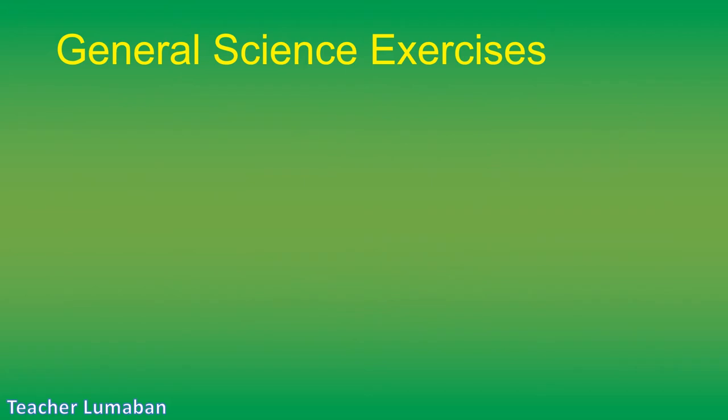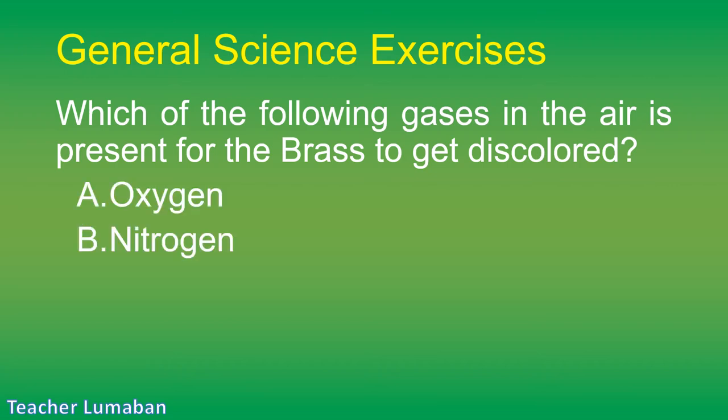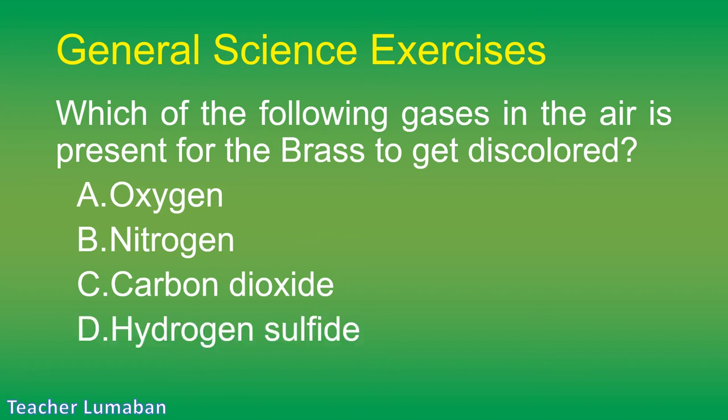Which of the following gases in the air is present for brass to get discolored? Letter A: oxygen. Letter B: nitrogen. Letter C: carbon dioxide. Letter D: hydrogen sulfide.